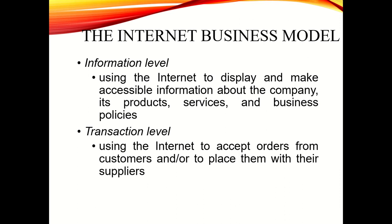Another is the transaction level. Organizations at the transaction level use the internet to accept orders from customers and to place them with suppliers. The information level is just displaying information — like Jollibee's website showing their history — while the transaction level is where the website is used for online ordering of their products.